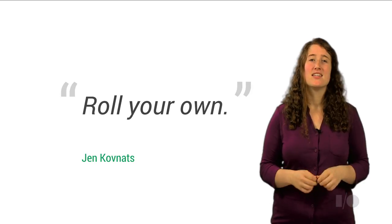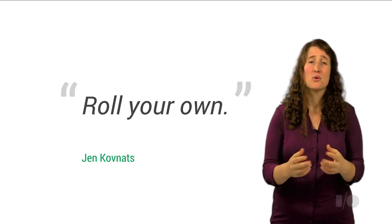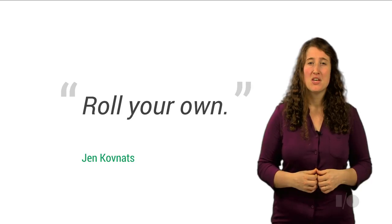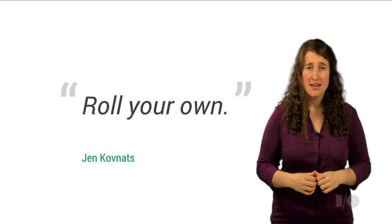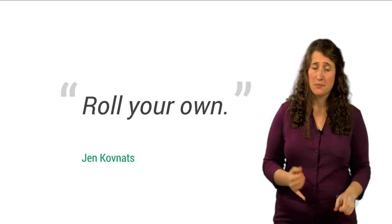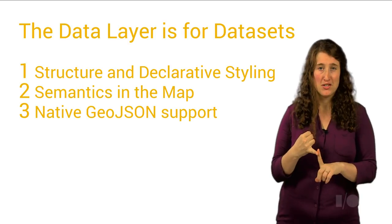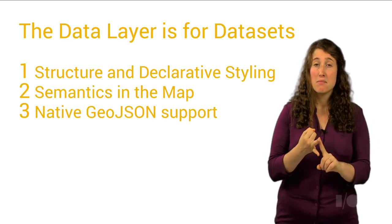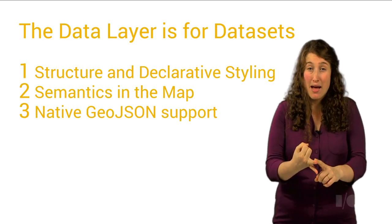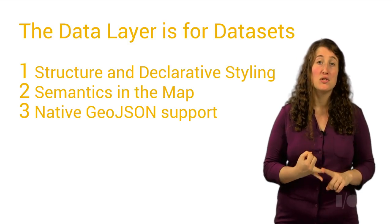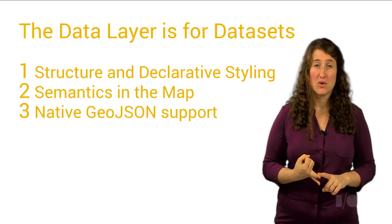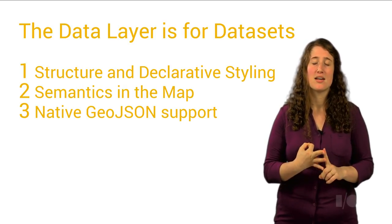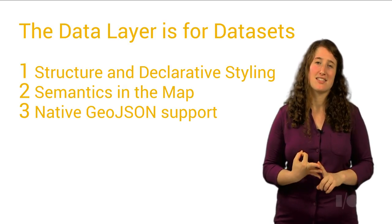The data layer is a developer's tool — it's designed to make your code cleaner and your life easier. So if you're creating a map to show a data set, the magic of the data layer gives you consistent structure and hooks for your data, unlocking things like declarative styling, semantics of the data loaded right in the map by way of properties, enabling you to use this information in crafting the map, and native GeoJSON support, which makes loading a data set ridiculously fast and easy.